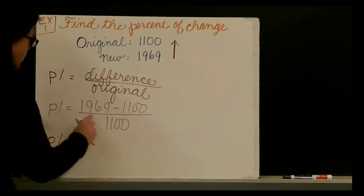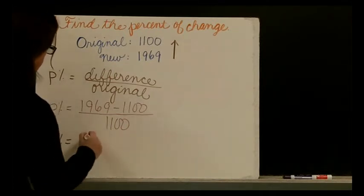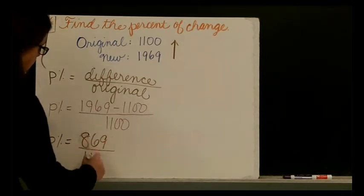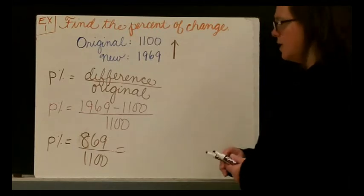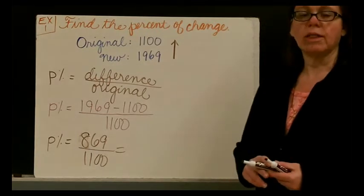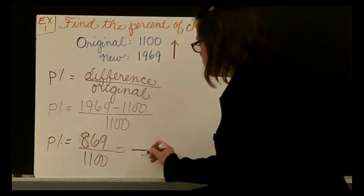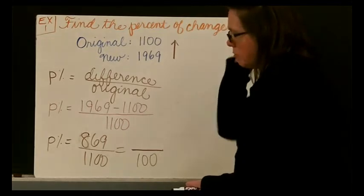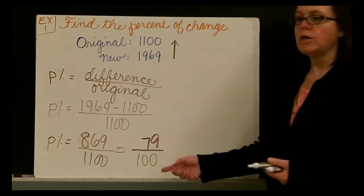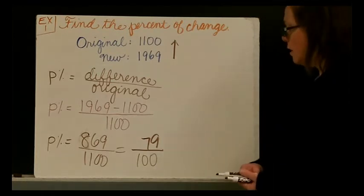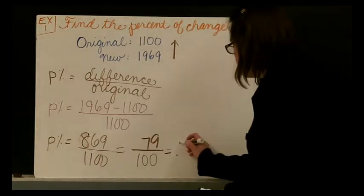So our percent of change is 1,969 minus 1,100, which is 869, divided by 1,100. And you might be tempted to look at that and think that it's already in its simplest form, but after you've factored the numbers a little bit, you'll see that they do have a factor in common. We actually have a factor of 11 as the greatest common factor. 11 goes into our denominator 100 times, and 11 goes into our numerator 79 times. Our next step is to simplify the fraction. Here, 79 and 100 are relatively prime, so we can't simplify this. Our next move is to convert this to a decimal. 79 divided by 100 is 0.79.